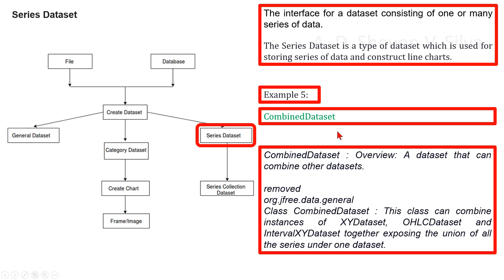Overview of CombinedDataset: a dataset that can combine other datasets. This was in class CombinedDataset in org.jfree.data.general. This class can combine instances of XYDataset, OHLCDataset, and IntervalXYDataset together, exposing the union of all series under one dataset.